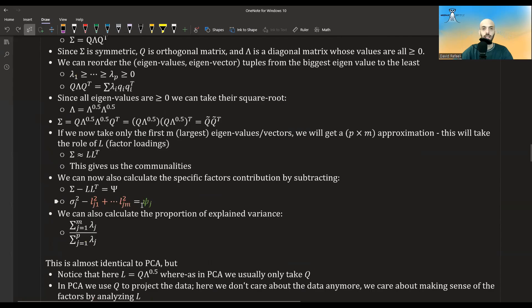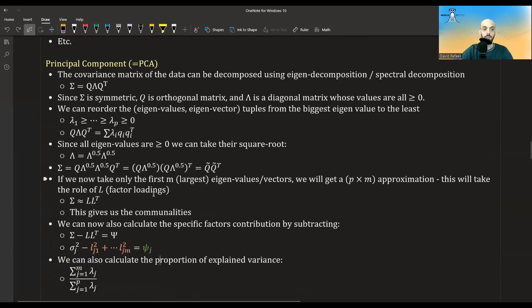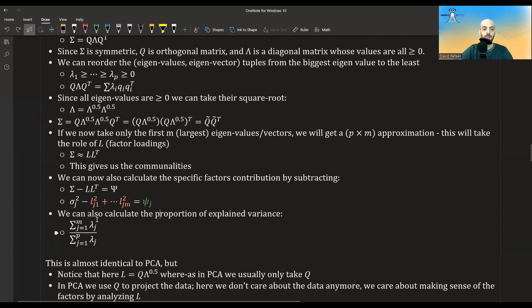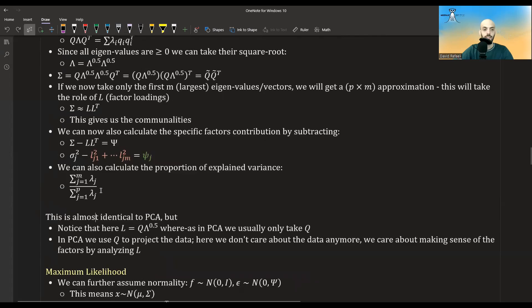We can also calculate the proportion of explained variance that this approximation or that this model gives us. It's just the sum of the ordered eigenvalues up to M divided by the sum of all the ordered eigenvalues. And so if this is large enough, I don't know, if this is like 90%, we would say, wow, our model with only M factors, we can explain 90% of the variance of our data.